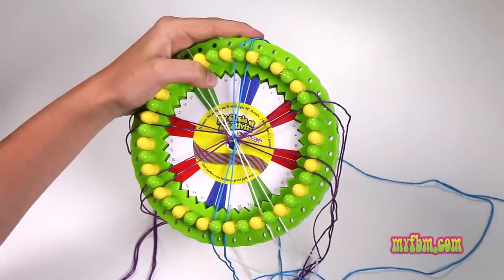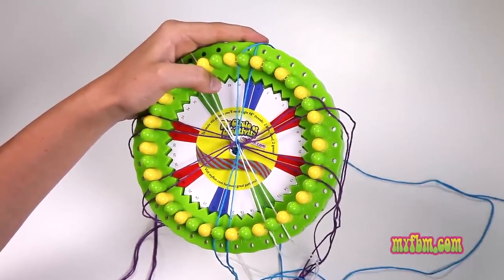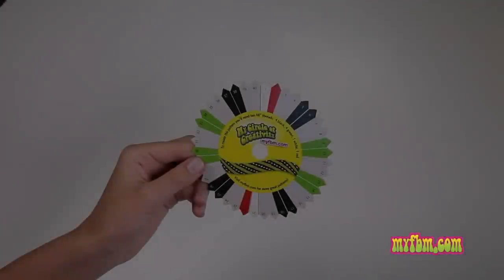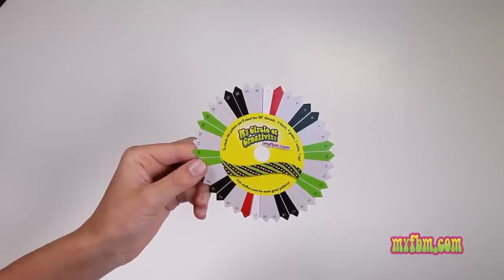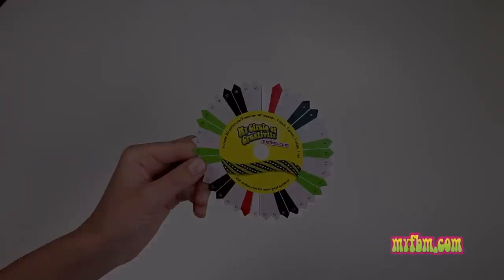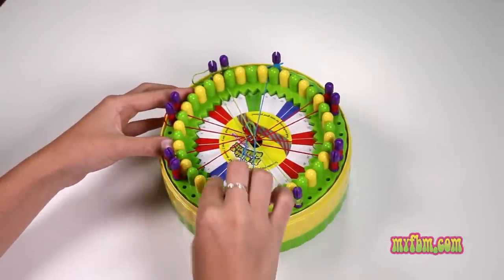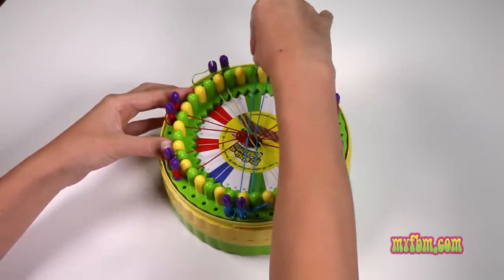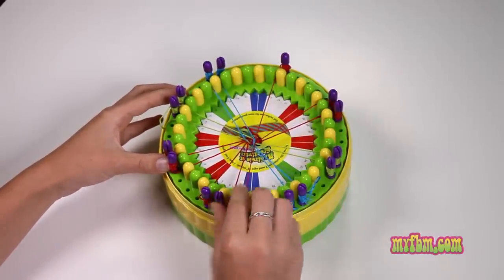The bobbins do help keep the strings from getting tangled. The pattern disc is only used for the initial setup - after that, follow the counterclockwise sequence. Remember, it's a circle of creativity, so get creative. Use your own colors and even experiment with different kinds of string or ribbon.